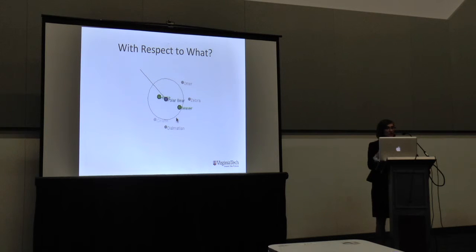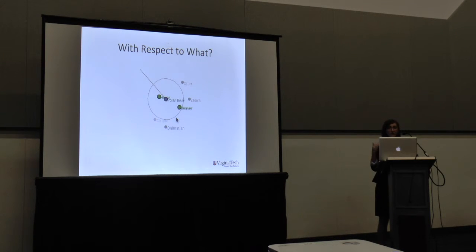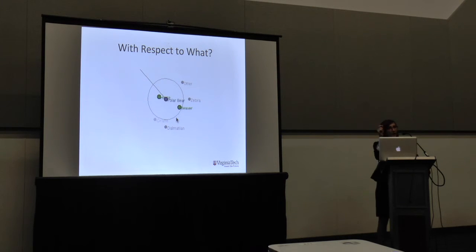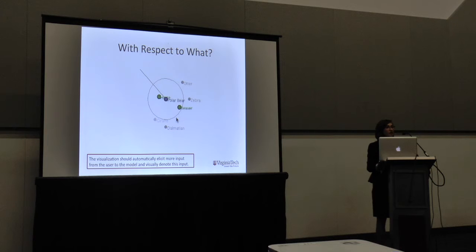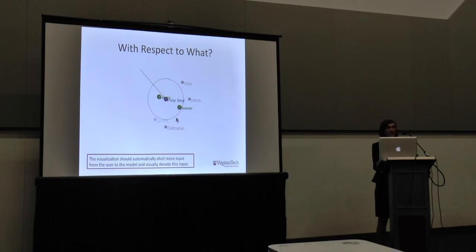So we designed an interaction to help with that. As the user moves a point, there's a radius, and within that radius, points are automatically getting highlighted. Highlighted is basically the same as moved — we're telling the user it's important to say, with respect to these other points, I'm moving this one point. The system does this automatically, and that problem didn't happen anymore. You move an outlier into the cluster, the system automatically accounts for what your interaction probably means. The visualization needs to automatically elicit as much input from the user as it can, and visually denote the input so the user understands what they actually need to do — without needing to understand the algorithm.